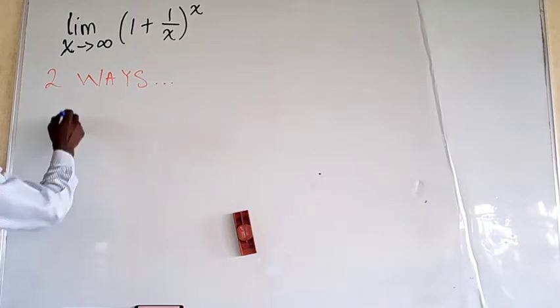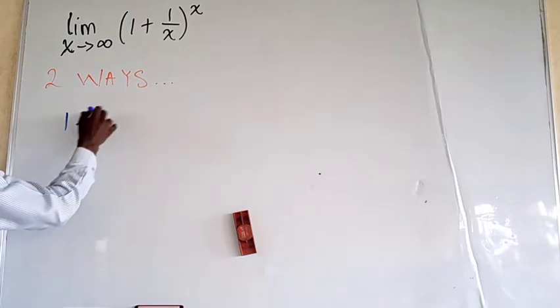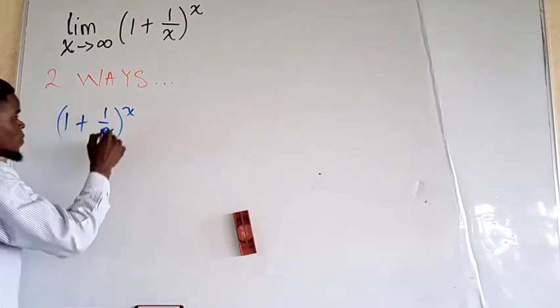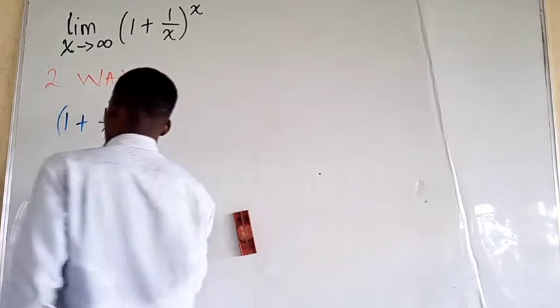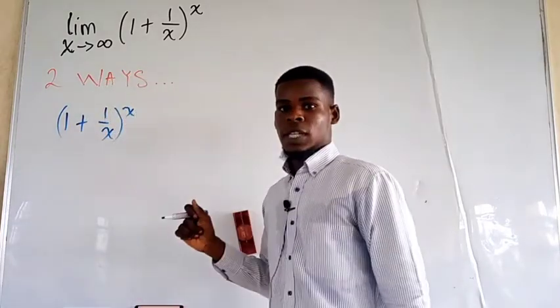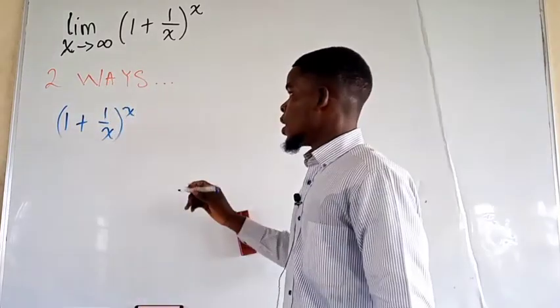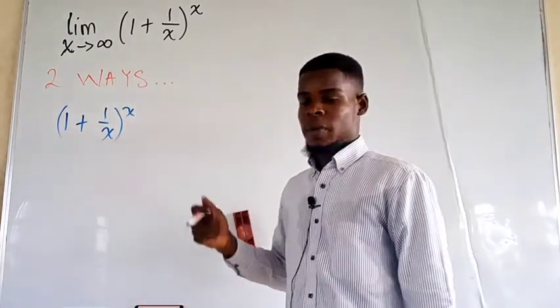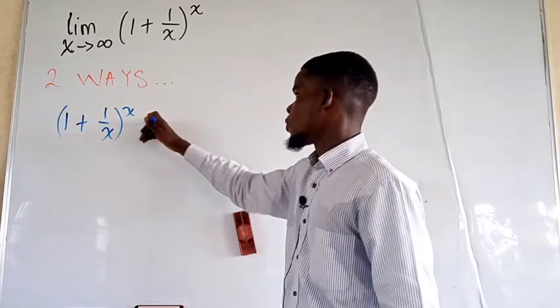Let me write down the main function: (1 + 1/x) raised to the power x. We're not talking about the limit just yet — let's first write down the binomial series expansion.